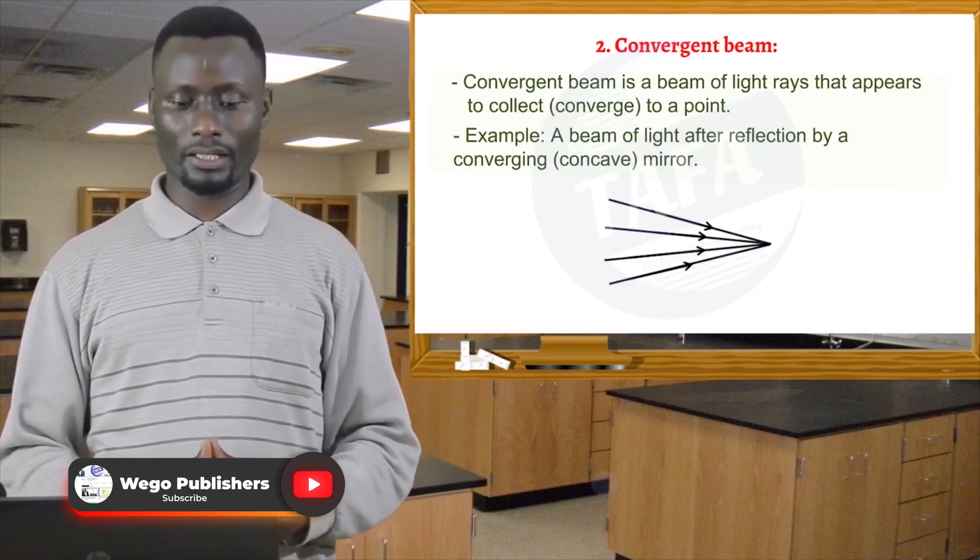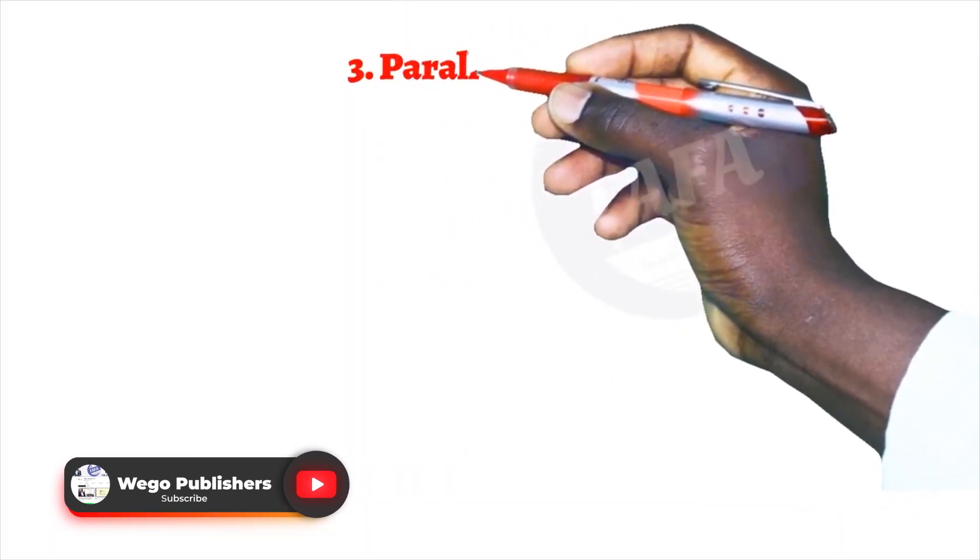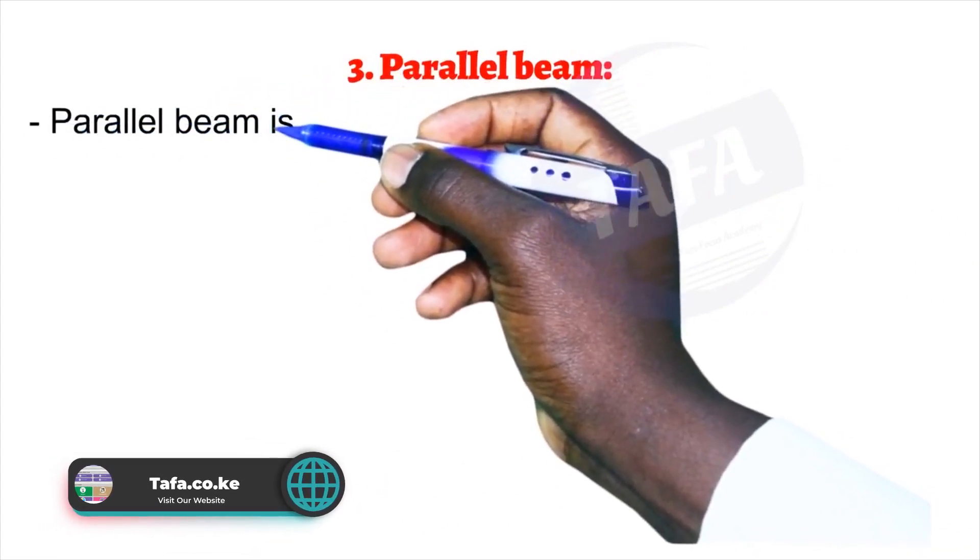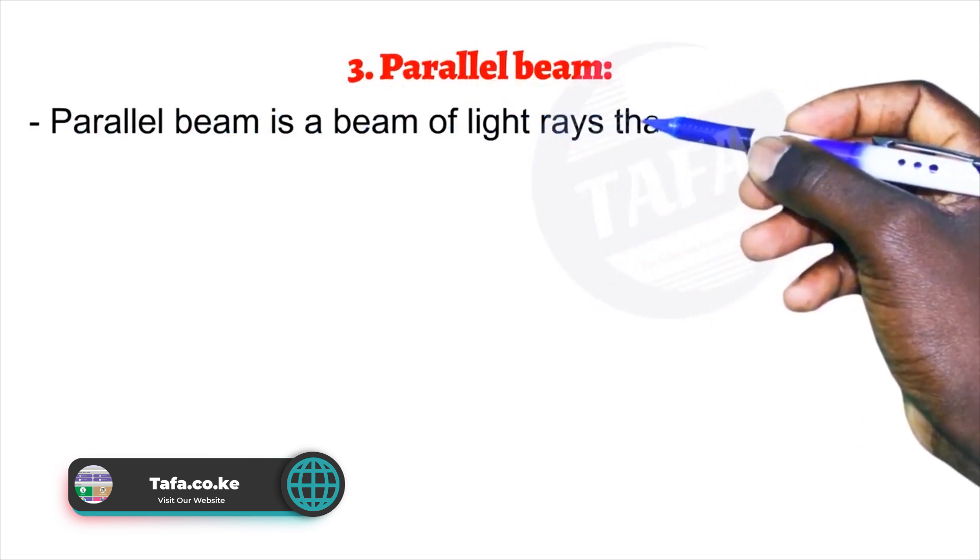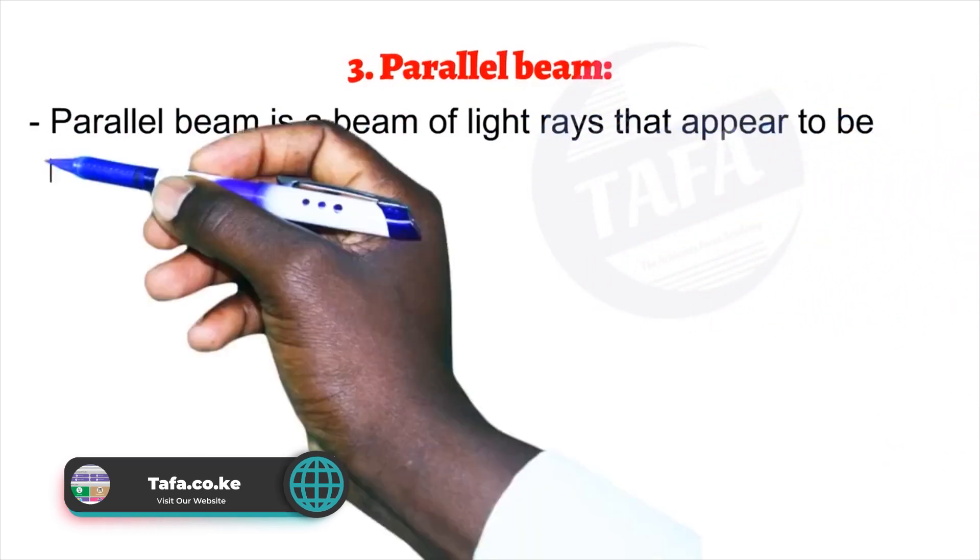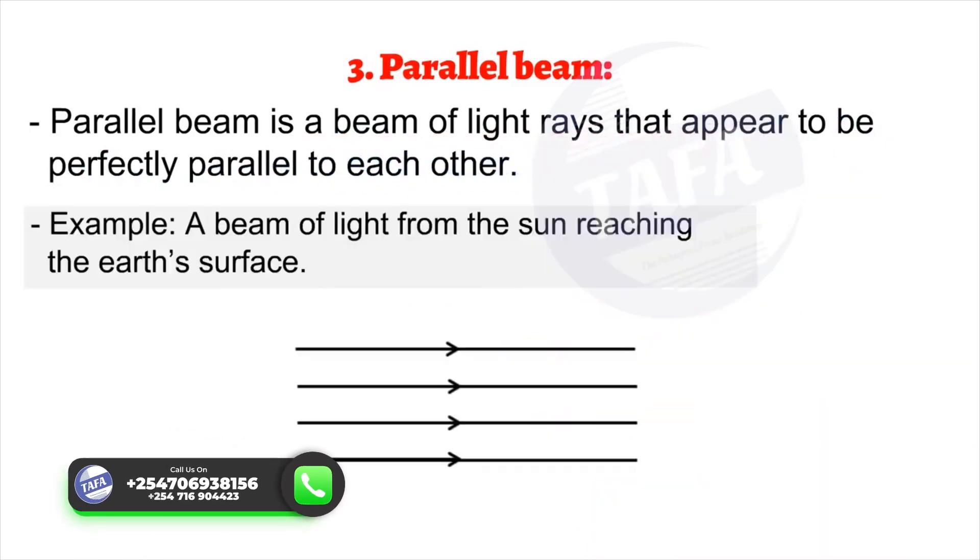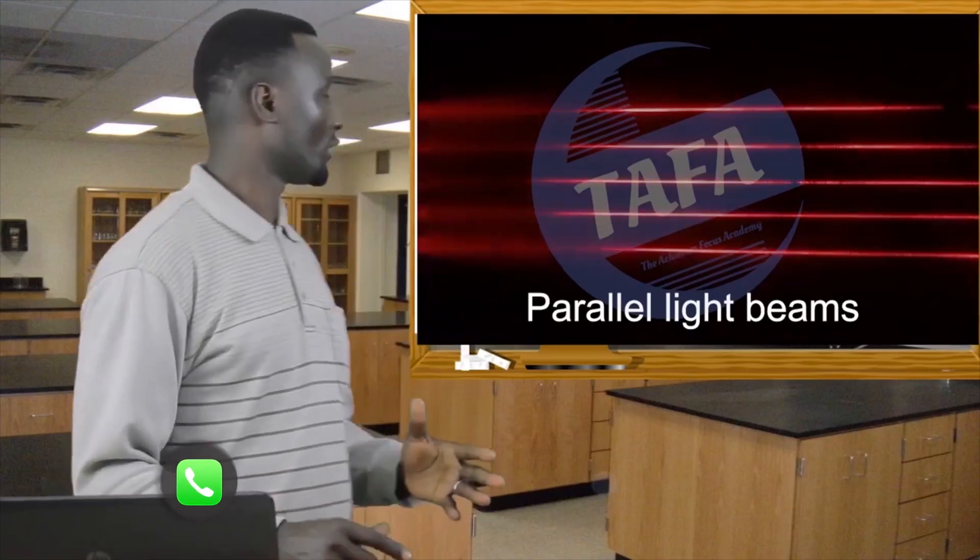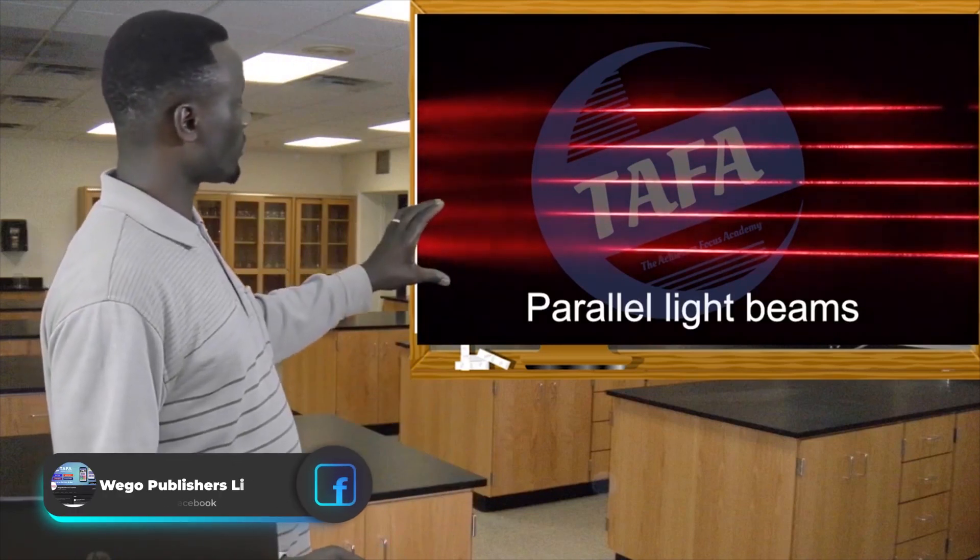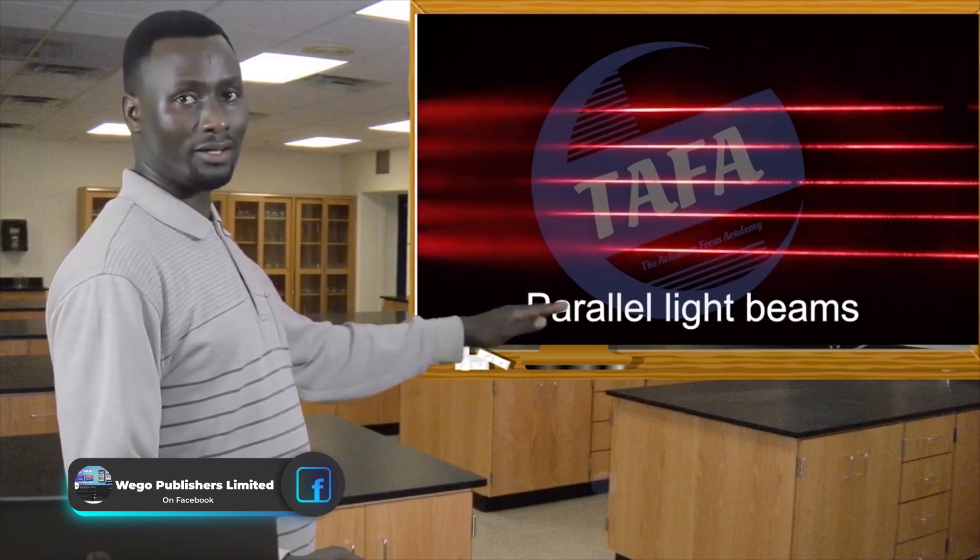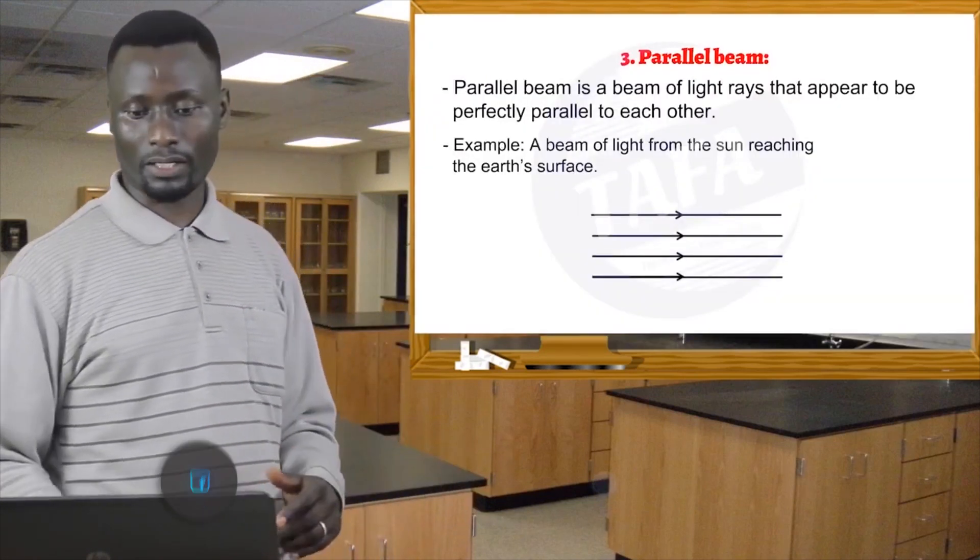And thirdly, parallel beam. A parallel beam is a beam of light rays that appear to be perfectly parallel to each other. Example: a beam of light from the sun reaching the earth's surface. This diagram shows a group of rays of light parallel to each other. And that is a parallel beam.